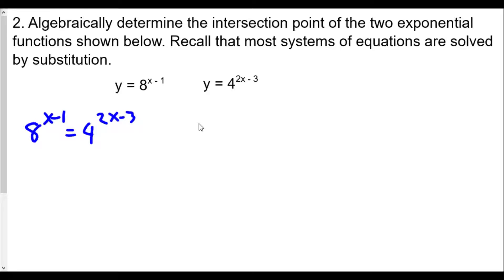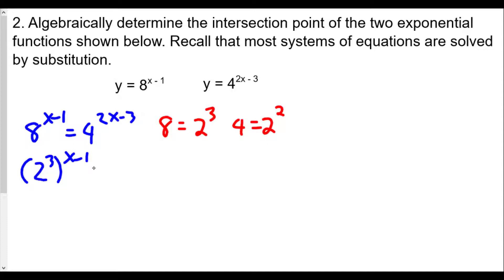We have an equation where we want the bases equal to each other. We know that 8 can be written as 2 to the power of 3, and 4 as a base can be written as 2 to the power of 2. Changing our equation to 2 to the third power raised to (x minus 1) equals 2 to the second power raised to (2x minus 3). Now with bases equal on both sides, we'll distribute our exponents using the power rule — when you raise a power to another power, we multiply the exponents.